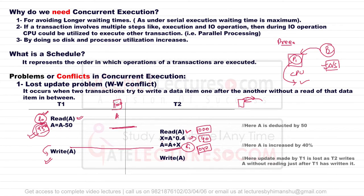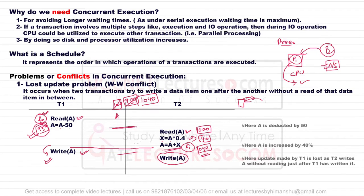T1 has already calculated its value, so it stores 950 into the account variable. After T1 completes, the CPU is given back to T2, which writes its computed value of 1040 into the account. You can see the issue: the value should actually be 1400 — T2 should write 1400. So T2 writes 1400 into the account.